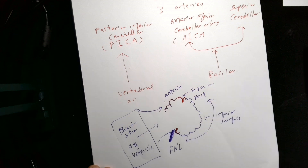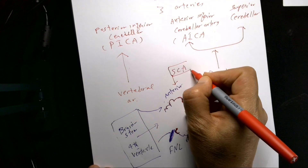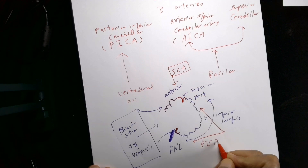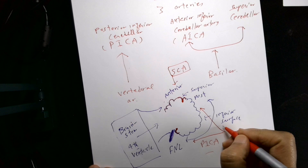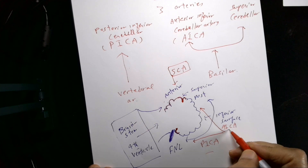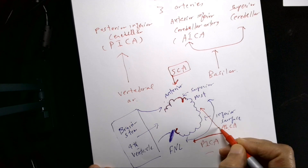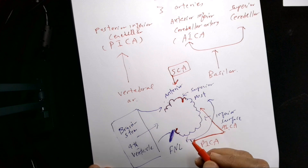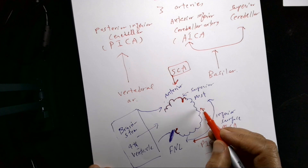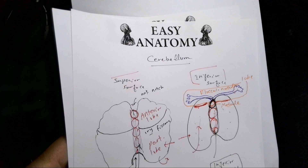The upper surface is supplied by only one artery: the superior cerebellar artery. The lower surface is supplied by two arteries: PICA — the posterior inferior cerebellar artery — supplying the posterior part of the inferior surface, and AICA — the anterior inferior cerebellar artery — supplying the anterior part of the inferior surface.